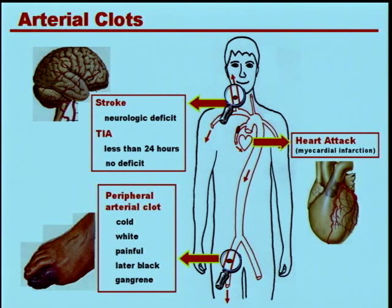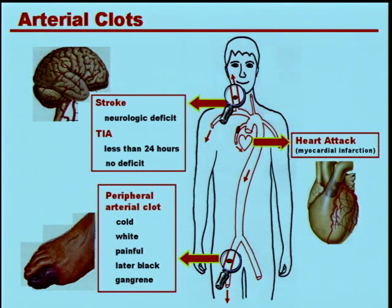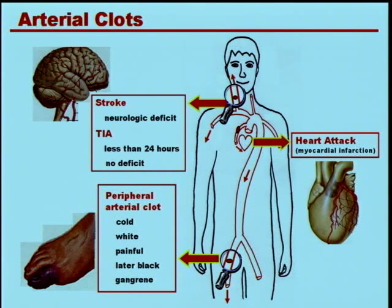Just to illustrate graphically what arterial clots are: a heart attack is probably the most commonly recognized one — a blood clot that finds its way into one of the blood vessels that supplies the heart muscle. A stroke occurs if a blood clot ends up in the brain. You can also have clots that plug up the arteries in the lower extremities, and we call that peripheral arterial vascular disease.